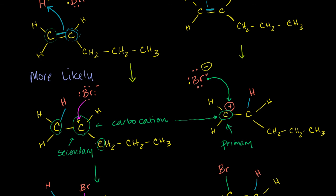The secondary carbocation is more stable because it has more carbon friends willing to lend it electrons. A primary carbocation was already hogging electrons from hydrogens, and hydrogen has no more electrons to share, so it's less stable. That's the reason Markovnikov's Rule holds. And if we compare a secondary to a tertiary carbocation — one with three carbons attached — the tertiary would be even more stable. The more electron-donating atoms you're bonded to, the more stable your carbocation.